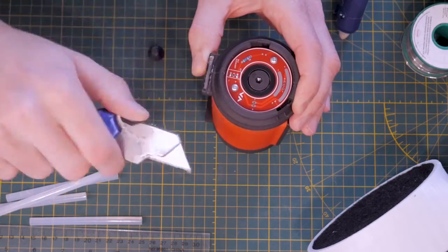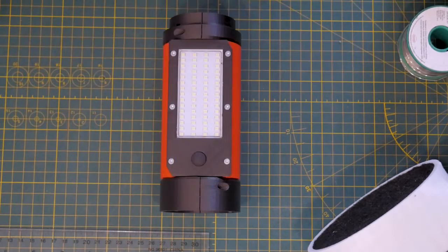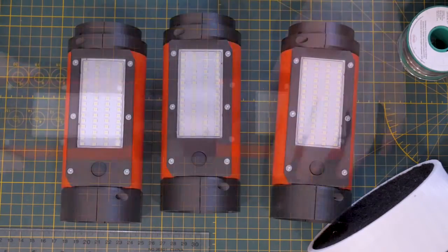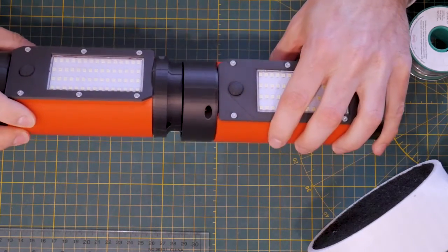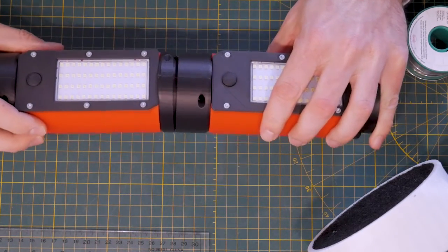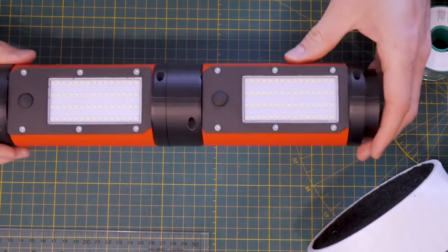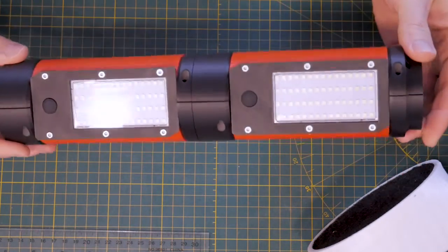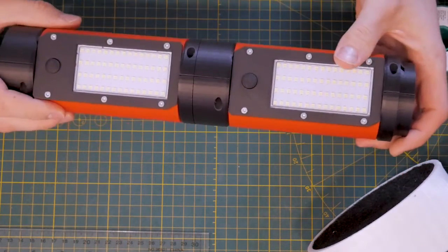I've repeated this whole process two more times to make two more tubes, and now we can check the connection between two tubes. If the magnetic connection is not strong enough, you can unthread the 5/16-inch long flathead screw on the male end to move it closer to the magnet for a stronger connection.